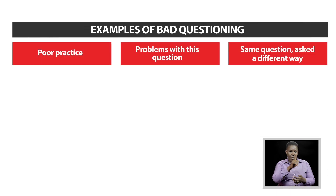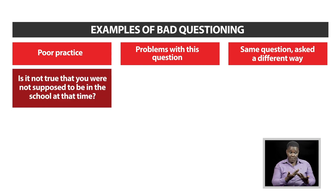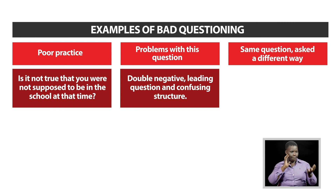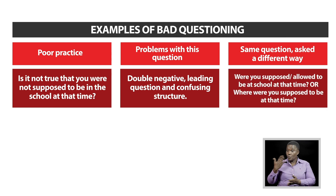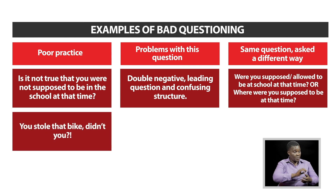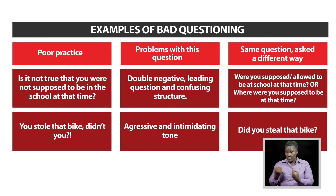Here are some examples of bad questioning. Poor practice would be to ask: 'Is it not true that you were not supposed to be in the school at that time?' — this is a double negative, a leading question with a confusing structure. Better alternatives would be: 'Were you supposed to be at the school at that time?' or 'Where were you supposed to be at that time?' Another example of poor practice: 'You stole the bike, didn't you?' — this is aggressive and has an intimidating tone. A better alternative would be: 'Did you steal the bike?'